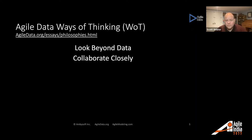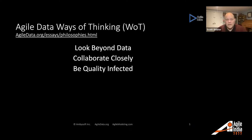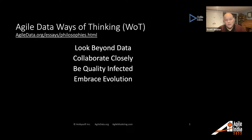We need to collaborate closely with our stakeholders, with other IT professionals, and work in an evolutionary manner. We also need to be quality-infected. Frankly, the data community has fallen down on data quality, largely because of a traditional mindset that still pervades the community. They've missed basic techniques that the agile community takes for granted — things like CI/CD, automated testing, and refactoring — fundamental strategies that have been missed for the most part by the data community.